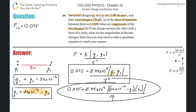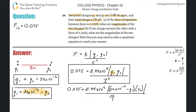Three squared is nine, so we have one equation with one unknown — now it's just math. Cross-multiplying, we move the nine over: 0.075 times nine gives 0.675. That equals 8.99 times 10 to the ninth, multiplied by the quantity 20 times 10 to the minus 6 times Q2 minus Q2 squared, after distributing Q2 to each term.